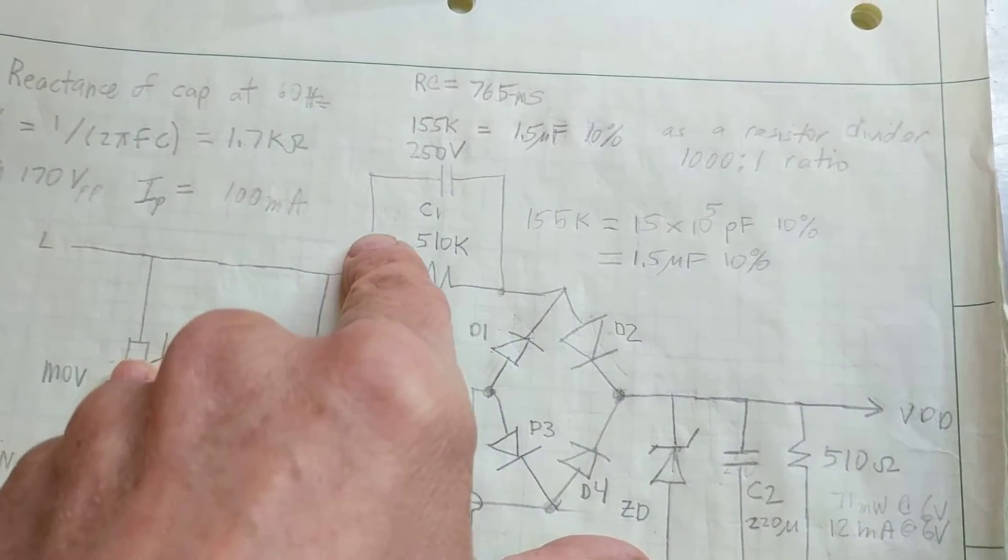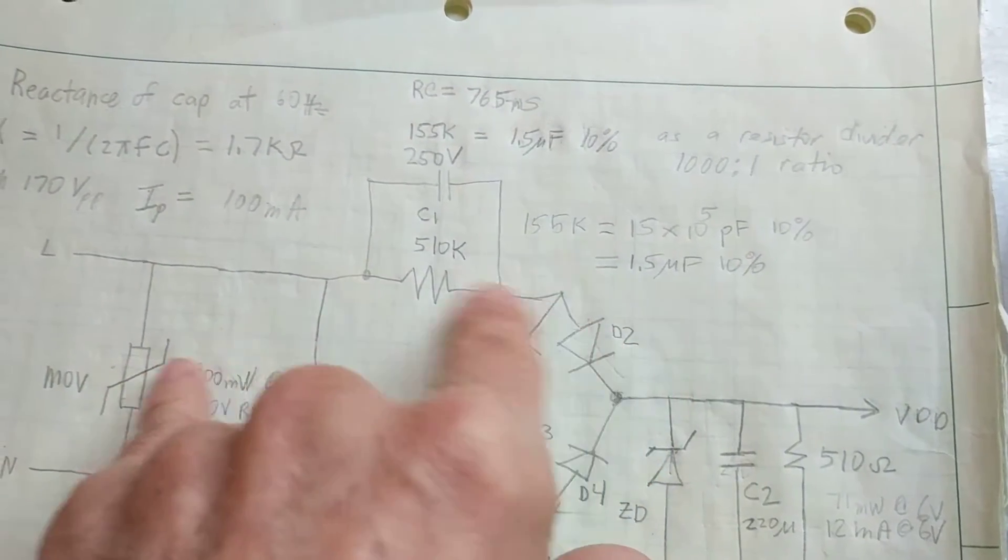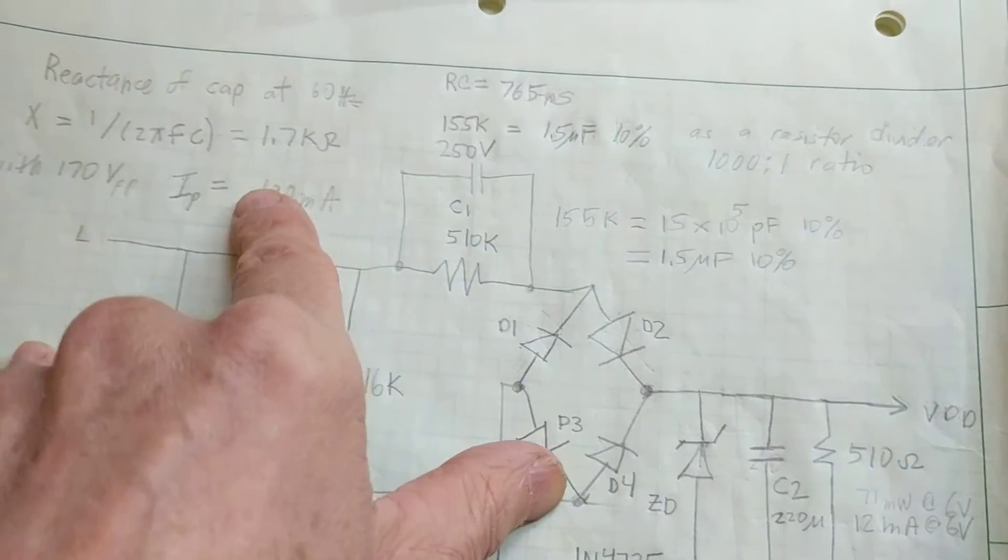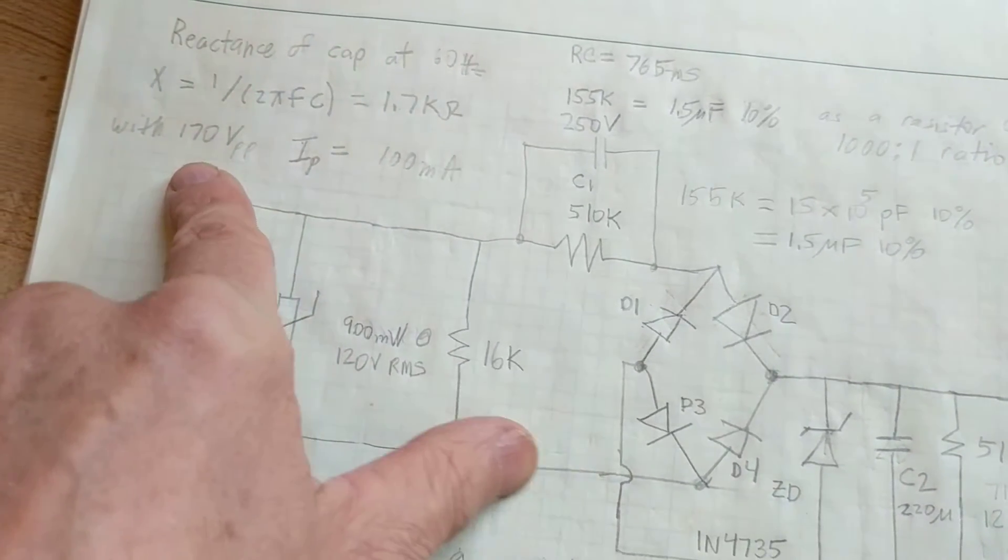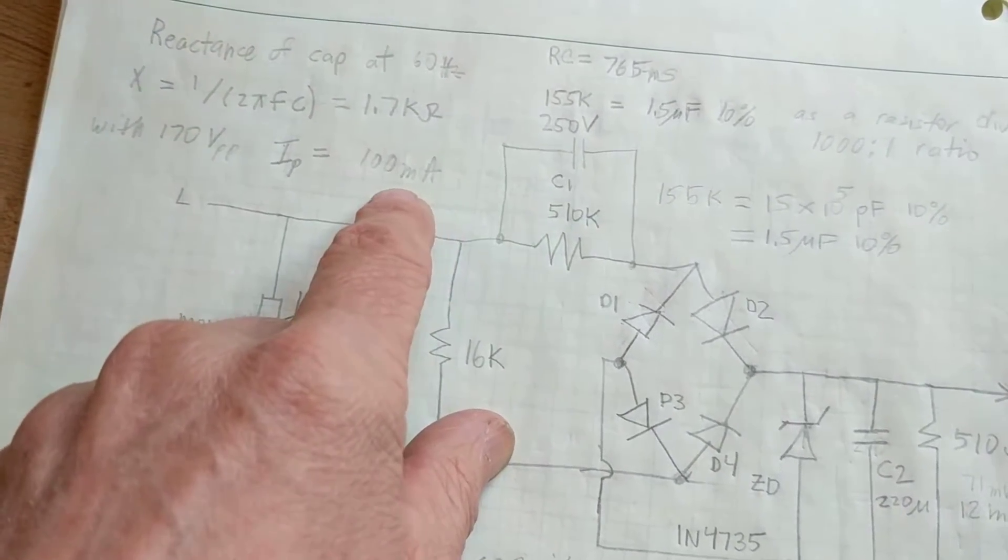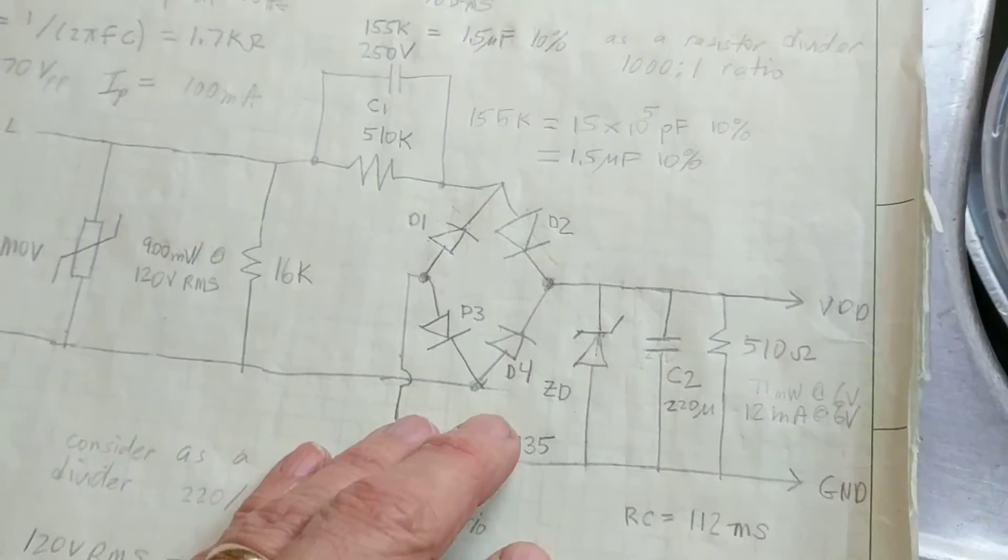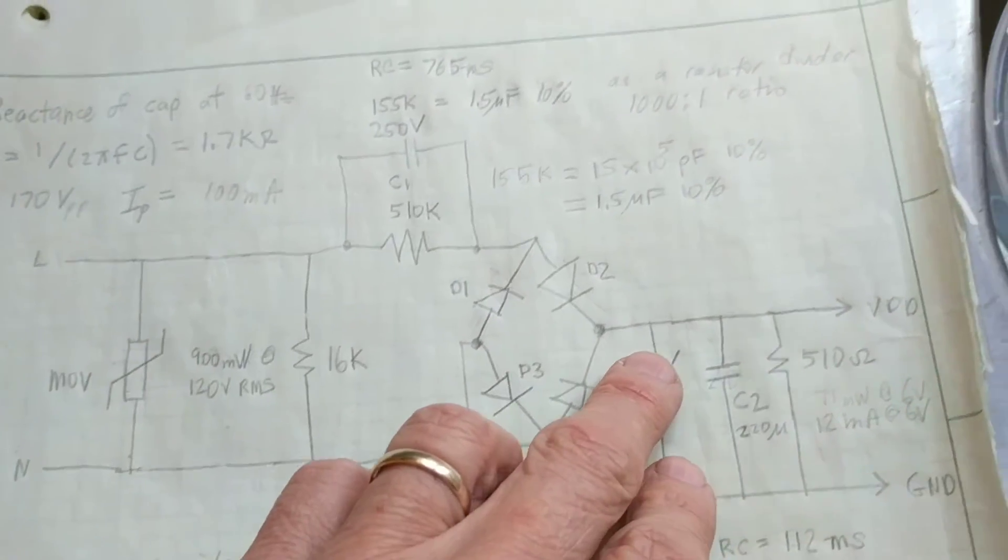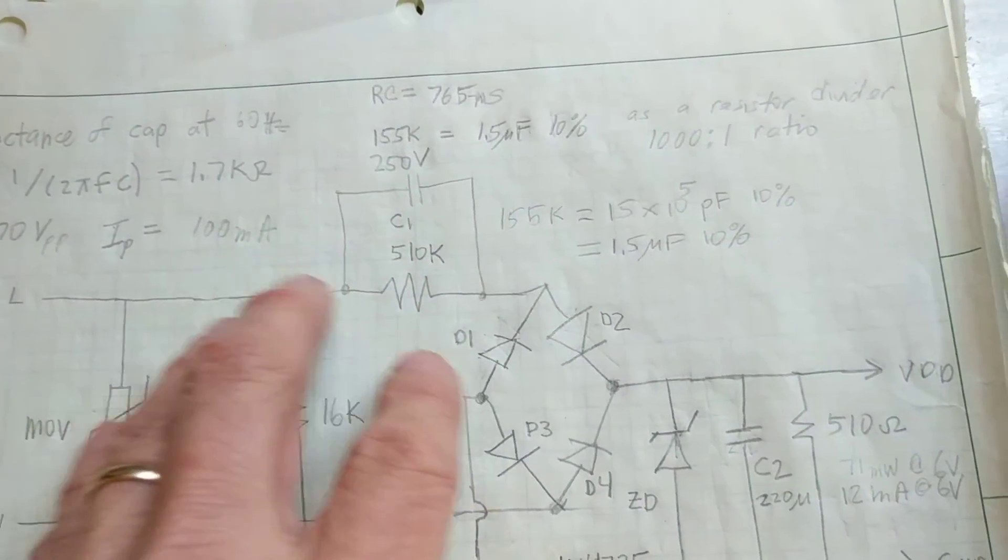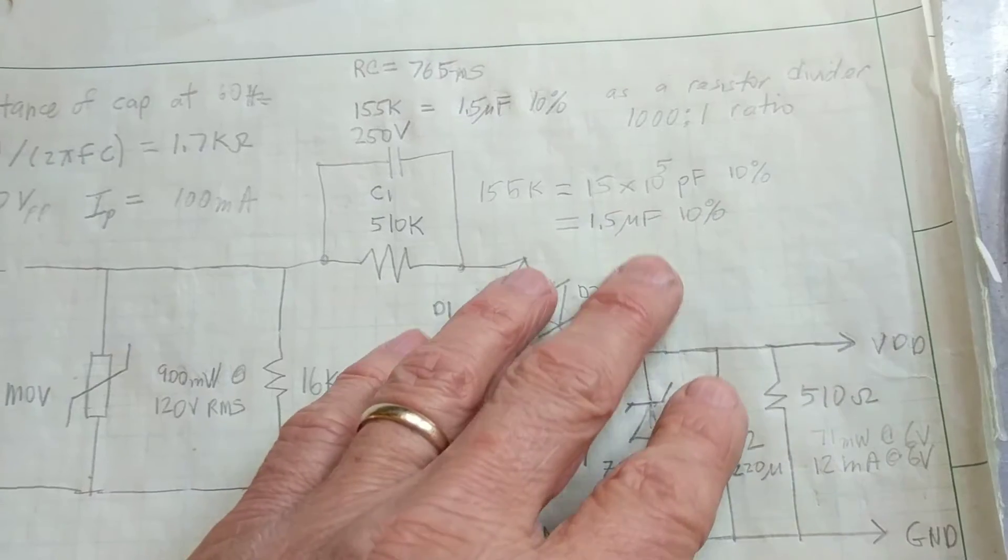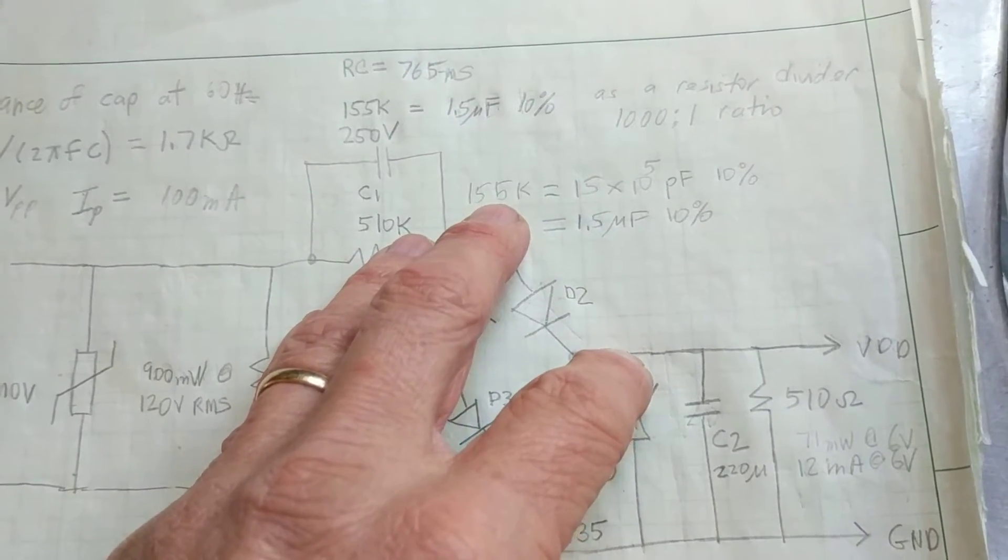You might also look at this as limiting the current that can go into it. The current is limited, 170 volts peak to peak. Current is limited to 100 milliamps. And that current is going through there. If that diode, the Zener diode, can handle up to that amount of current, then it's going to clamp it at 6 volts.